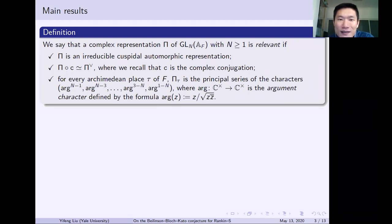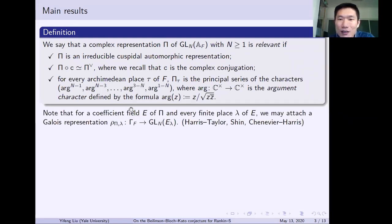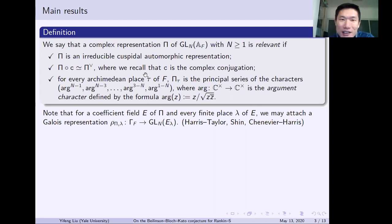This is an admissible representation of GL_N(C), and it is exactly the standard base change of the trivial character of the definite unitary group of rank N. For a coefficient field E of this kind of automorphic representation and every finite place lambda of E, we may attach a Galois representation rho_{pi,lambda} — actually a compatible system of Galois representations from Gamma_F to GL_N(E_lambda). This is achieved by a series of works over many years: Harris-Taylor, Shin, and finally Shin-Caraiani-Harris. This is now common knowledge — you may attach Galois representations for this kind of automorphic representation.